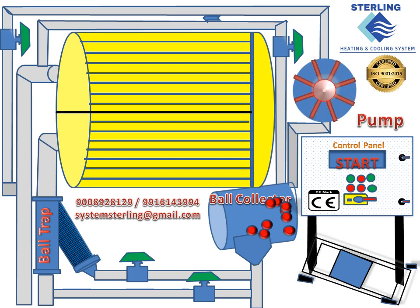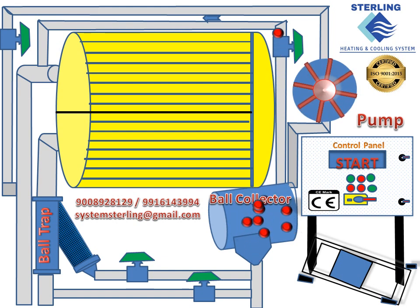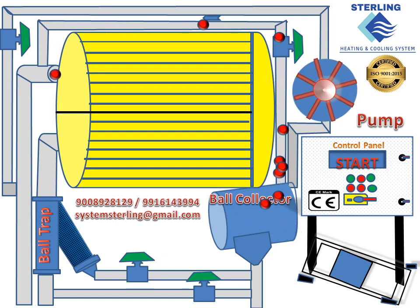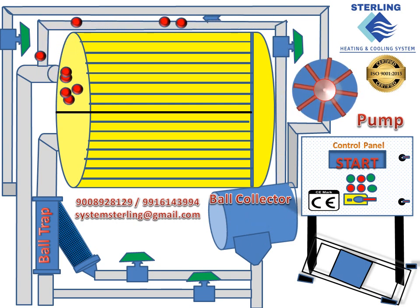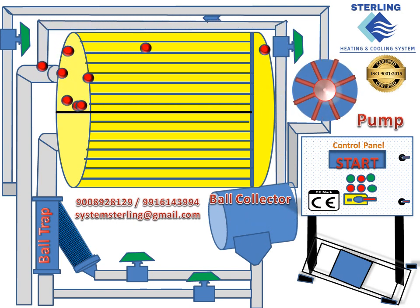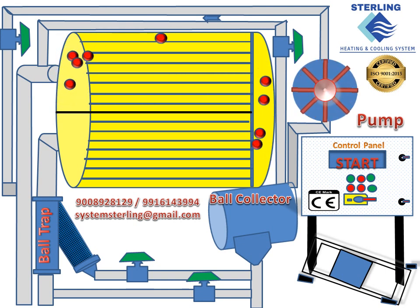The balls move inside the copper tubes to scrub the inner wall of the tube. After leaving the tube, the balls exit the end cover of the condenser with the circulating cooling water and enter the ball collector installed on the outlet pipeline. The ball trap in the ball collector then traps the balls, with the water flowing away through the screen. The balls then return to the ball injector, completing a whole cleaning process.